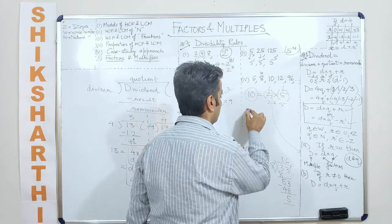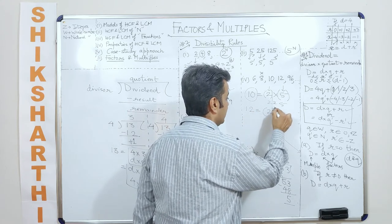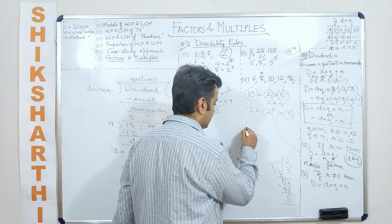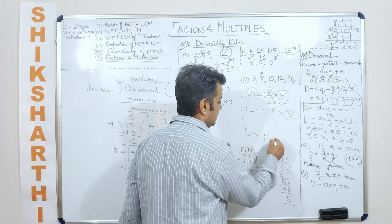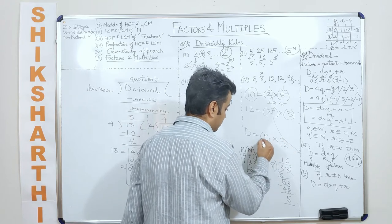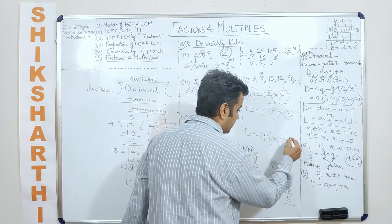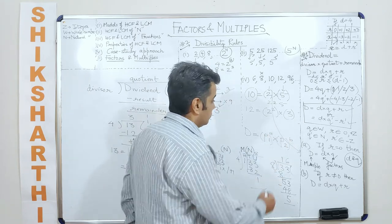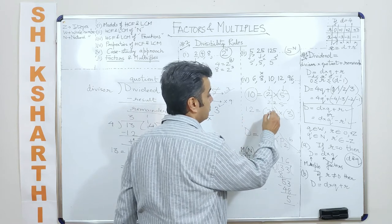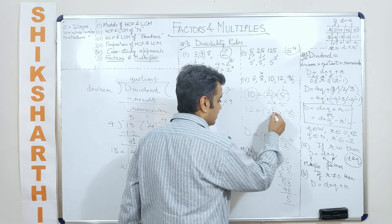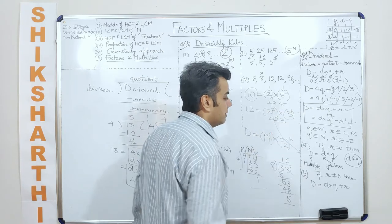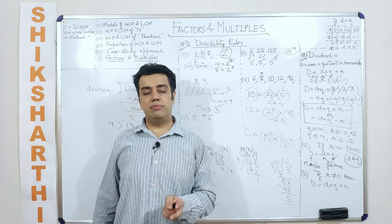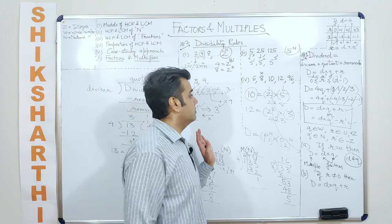For divisibility by 12: since 12 = 2² × 3 = 4 × 3, a number divisible both by 4 and by 3 is divisible by 12, and a number divisible by 12 must be divisible both by 4 and by 3. Write the number in terms of its prime factors and their powers, then combine into two factors.